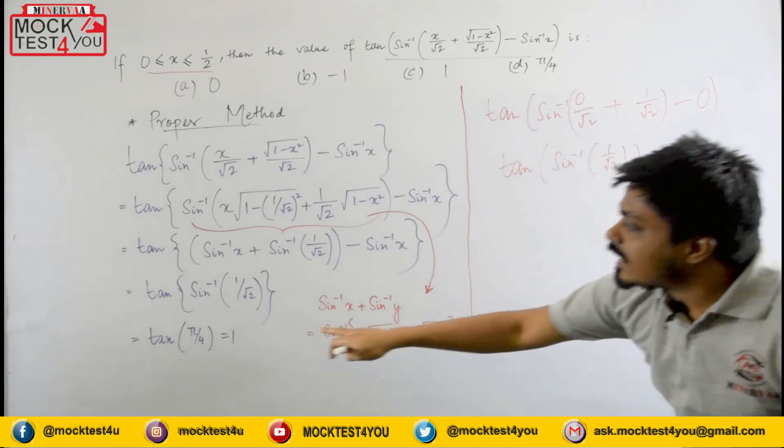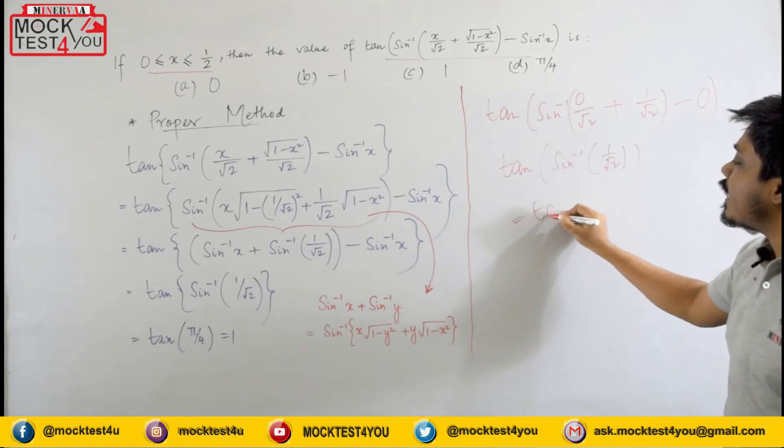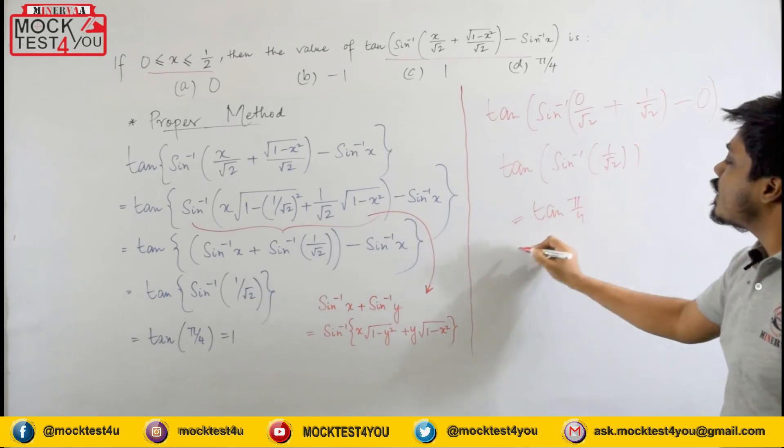So this becomes pi by 4 and that is actually this step. So we have tan of pi by 4 is equal to 1. So that's how we solve.